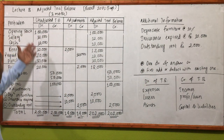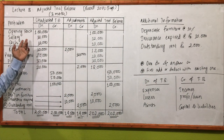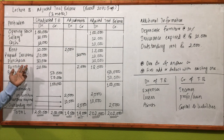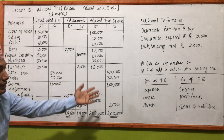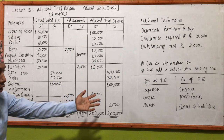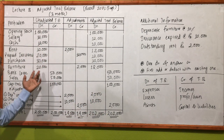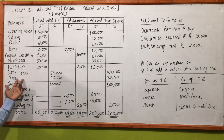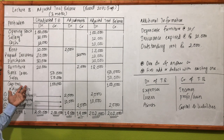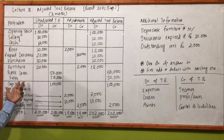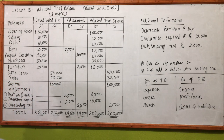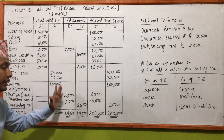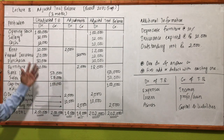We have a question about opening stock, salary, cash, rent, prepaid insurance, purchase, and furniture — these are debit items, meaning some expenses, some losses, and some assets. Bank loan, sales, and capital are on the credit side — capital and liability. Sales means income, bank loan means liability, capital means capital. So we have the credit side of this question.